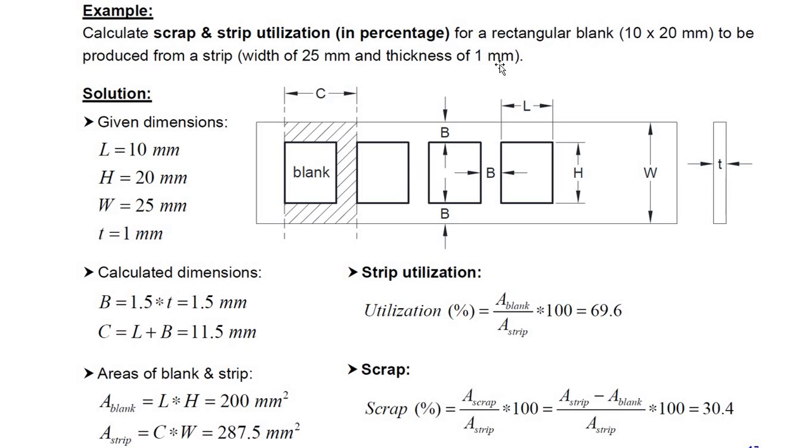So 1.5 multiplied by thickness 1 millimeter gives us 1.5 millimeters. The lead has to be length of the blank, which is 10 millimeters, plus the lead ahead. So it comes around, length is 10, lead is 1.5, so C equals L plus B equals 11.5 millimeters, and at a distance 11.5 millimeters we can create another blank.